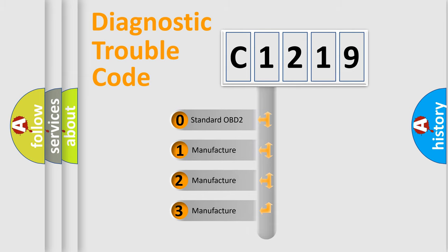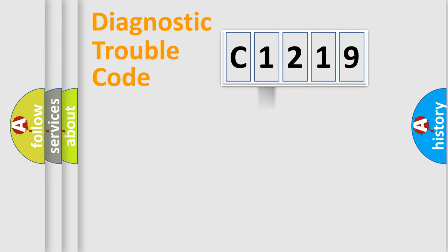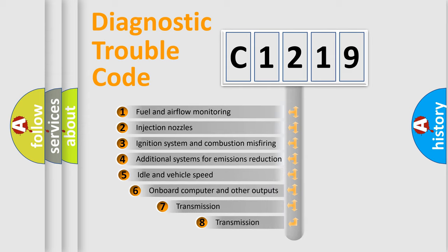If the second character is expressed as zero, it is a standardized error. In the case of numbers 1, 2, or 3, it is a more prestigious expression of the car-specific error.